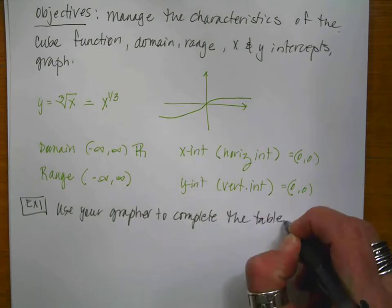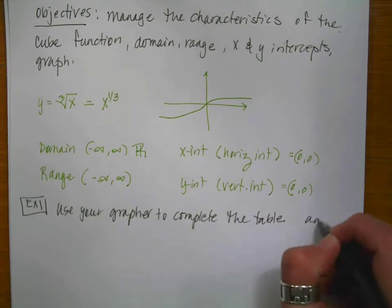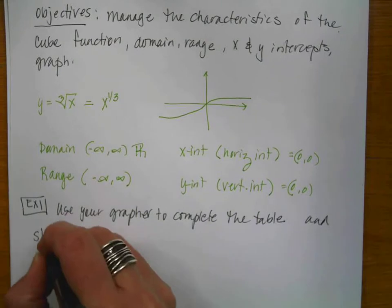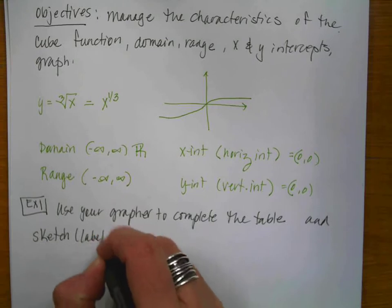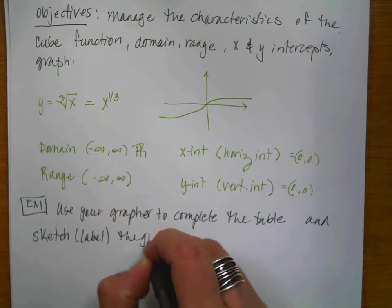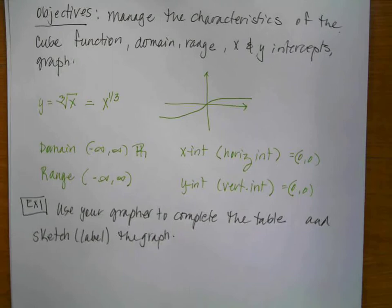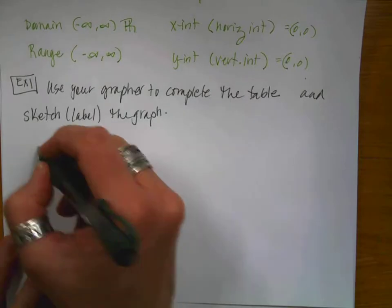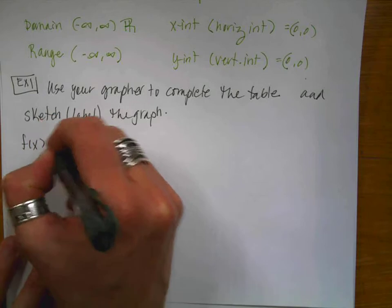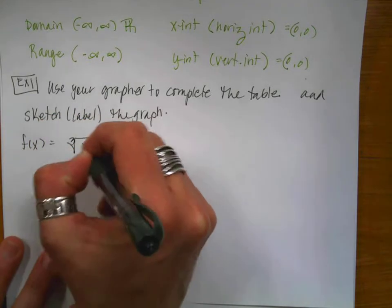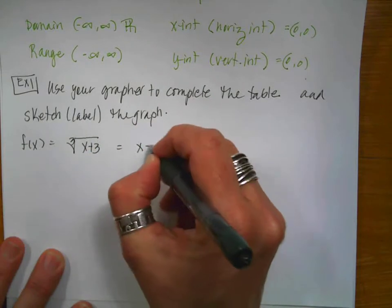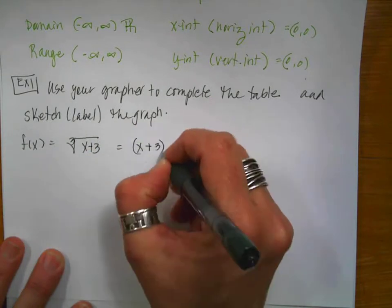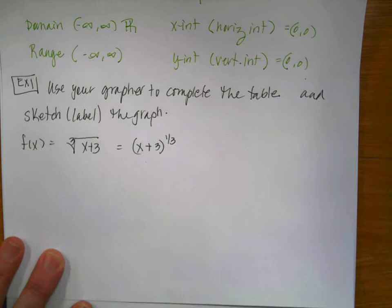And I'll show you tricks on how to do this effectively. And sketch. And any time you have to sketch, that means, of course, that you have to label the graph. So the function that we're going to be given, f of x is going to equal the cube root of x plus 3. And I'm going to write this right off the bat as (x + 3) raised to the 1/3 power.